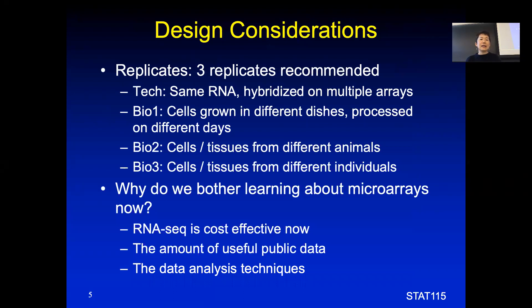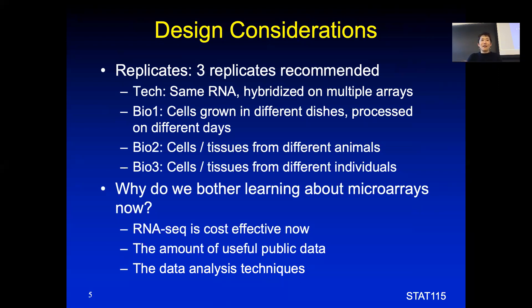There are some interesting design considerations. In the very early days, this array was not really in production at industrial scale. People actually spotted these arrays by hand, or later with robotic automation machines that graduate students built. Every time an array was made, sometimes some spots were bigger than others. So people used to do technical replicates — the same RNA hybridized on different arrays to generate different replicates. These are usually needed when you're not confident about array quality. In the early days, graduate students spotted arrays, so there could be a smudge or some spots becoming bigger or smaller.